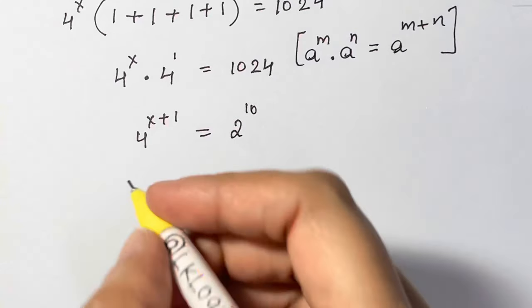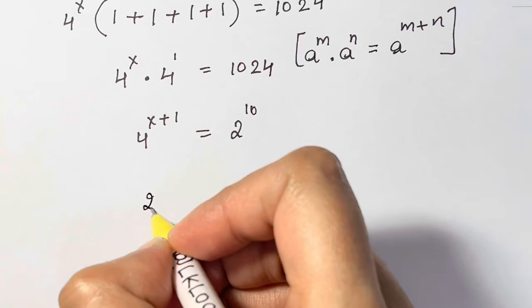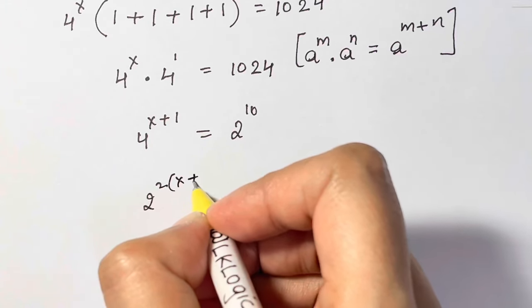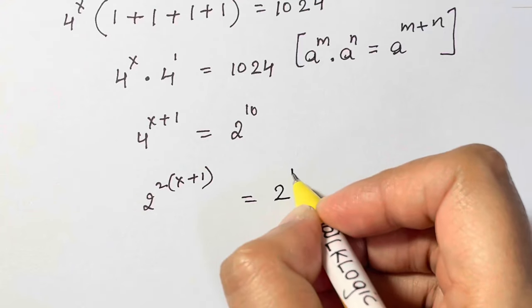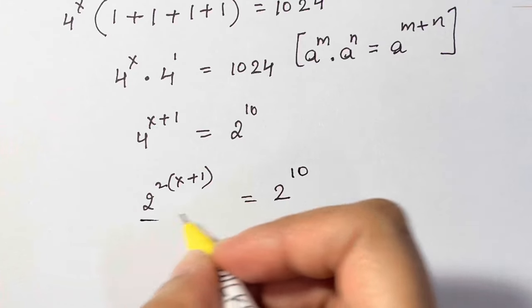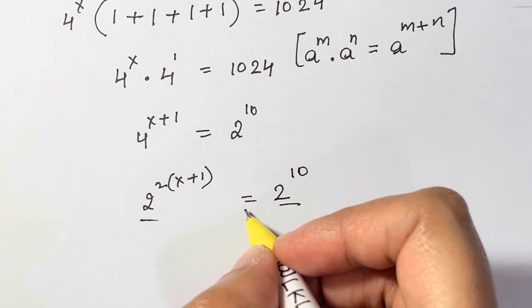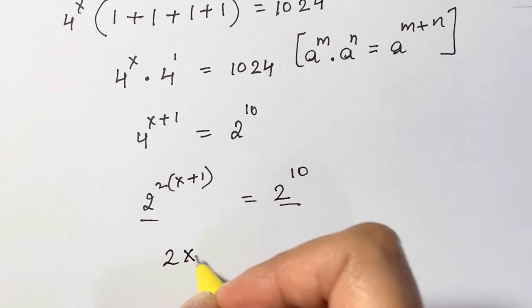Now 4 can be written as 2 squared, then you have x plus 1 is equal to 2 to the power of 10. Now when bases are same, this equal to between them, you can equate the powers. 2 times x plus 1 is equal to 10.